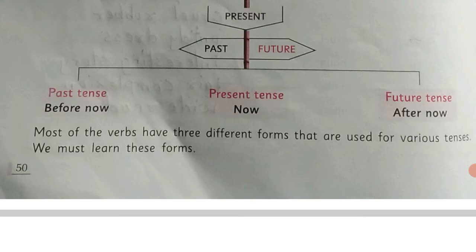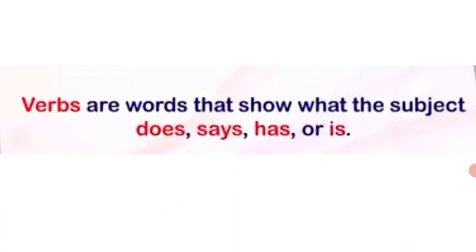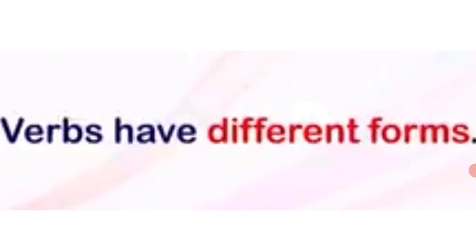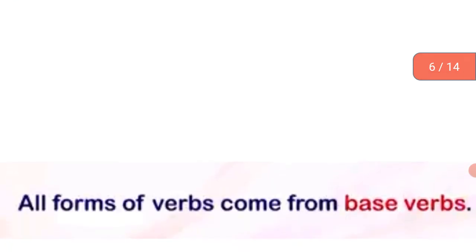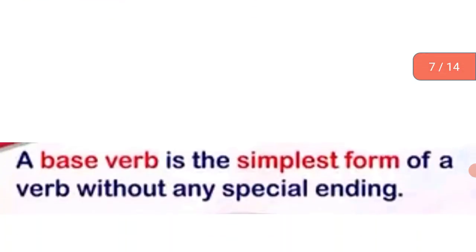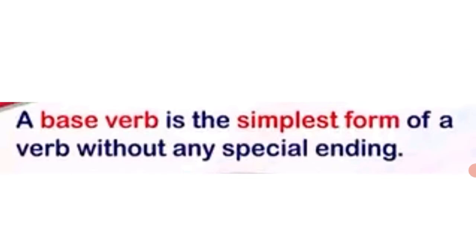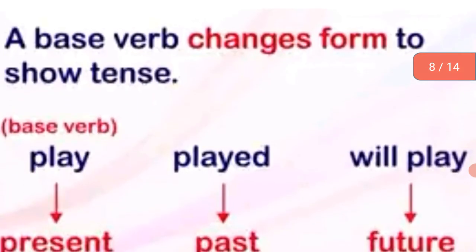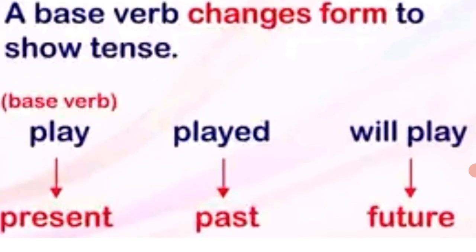Most of the verbs have three different forms that are used for various tenses. We must learn these forms. Verbs are words that show what the subject does, says, has, or is. Verbs have a definite form. All forms of a verb come from the base verb. A base verb is the simplest form of a verb without any special ending. Children, this you will study in detail in higher class — this is just for your knowledge.